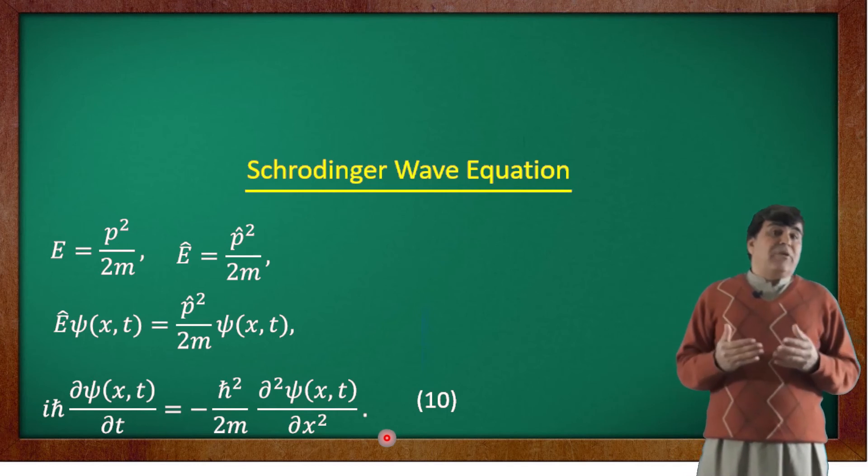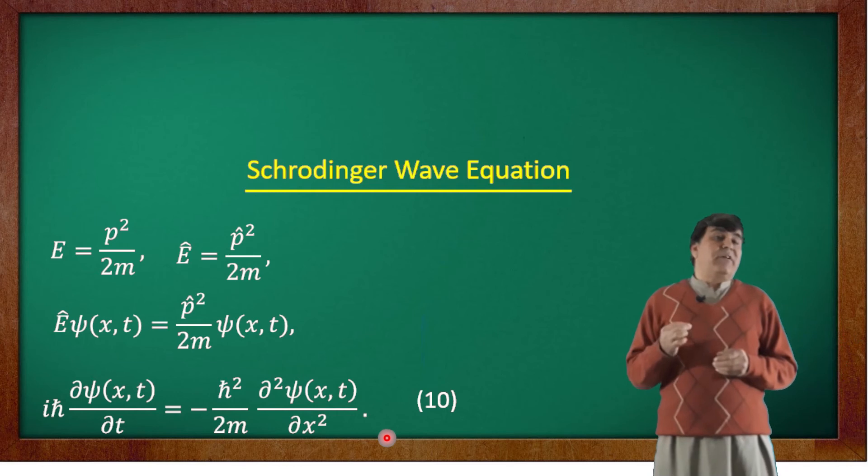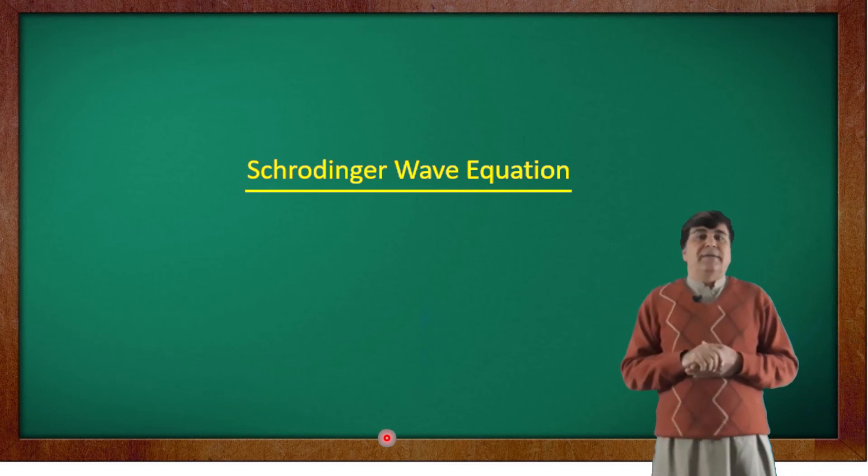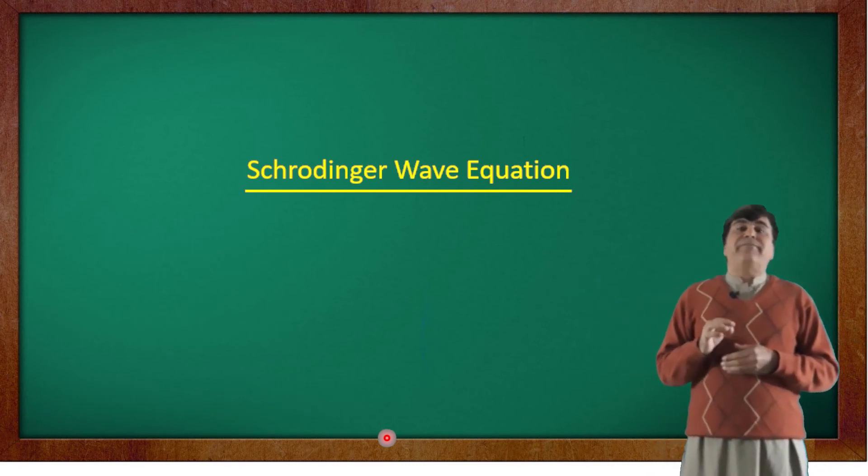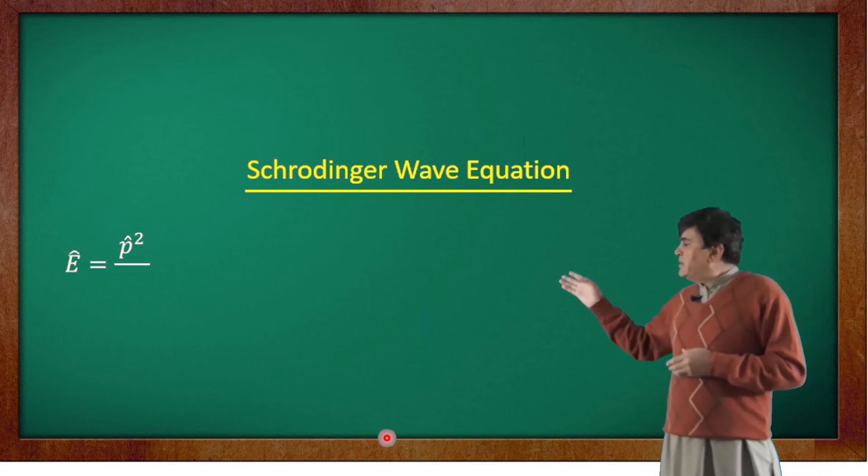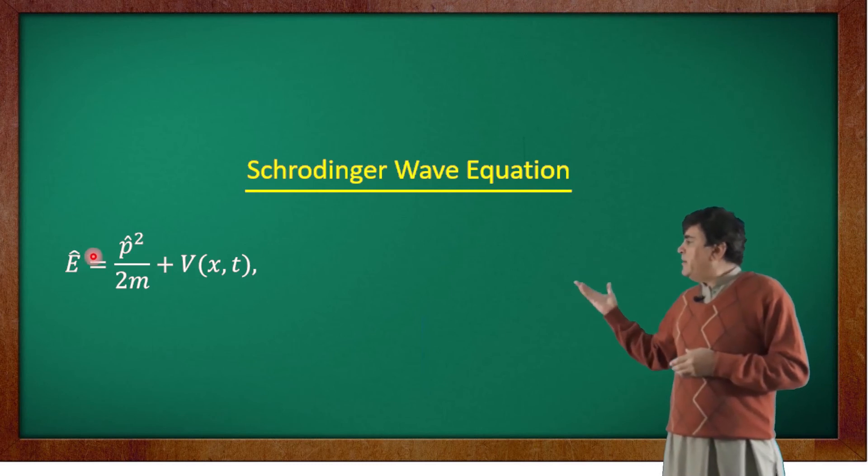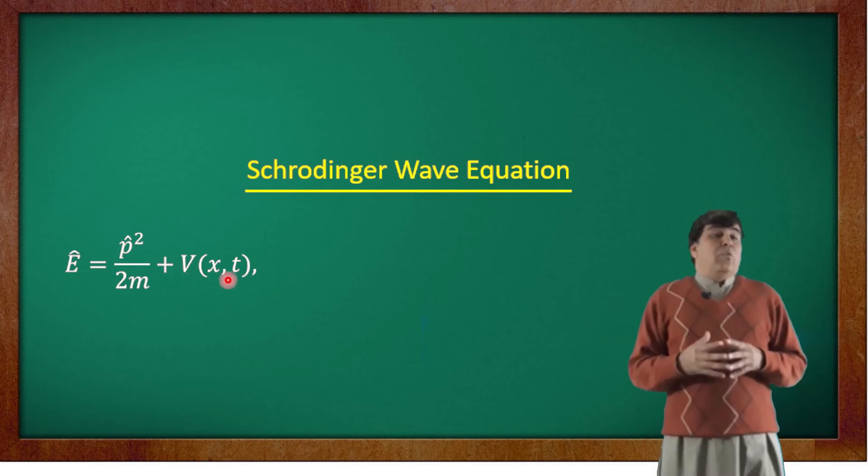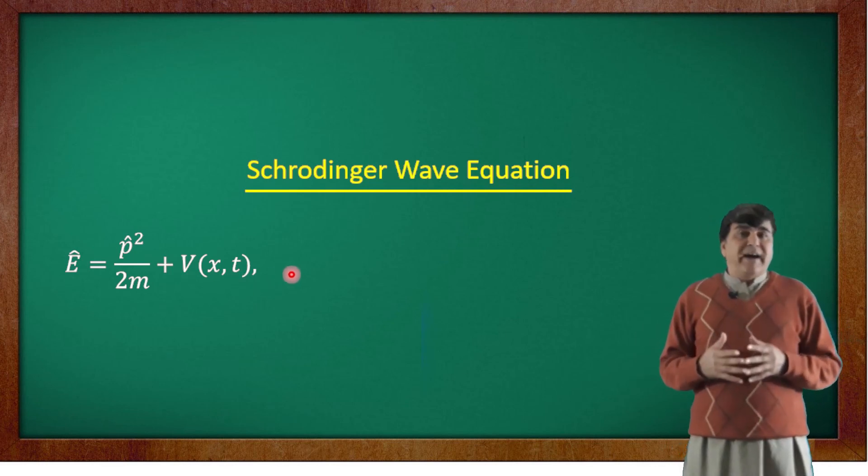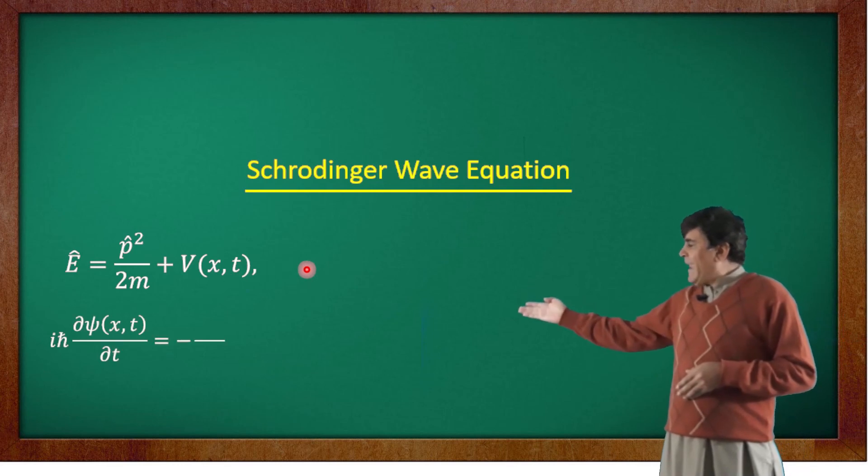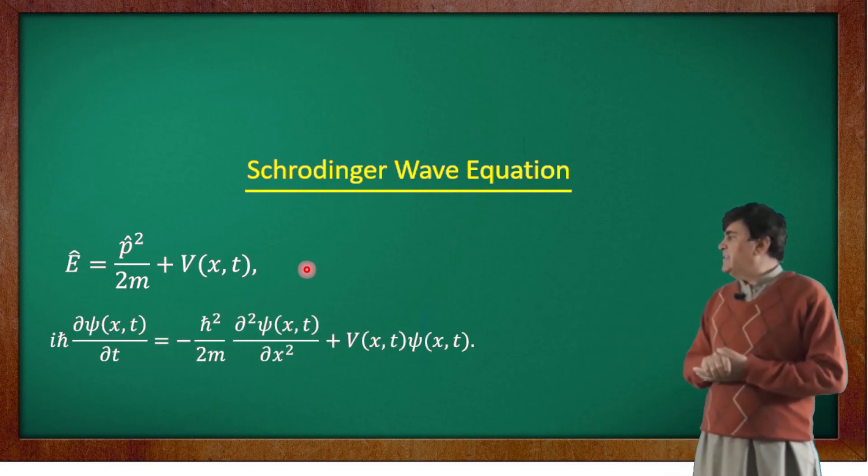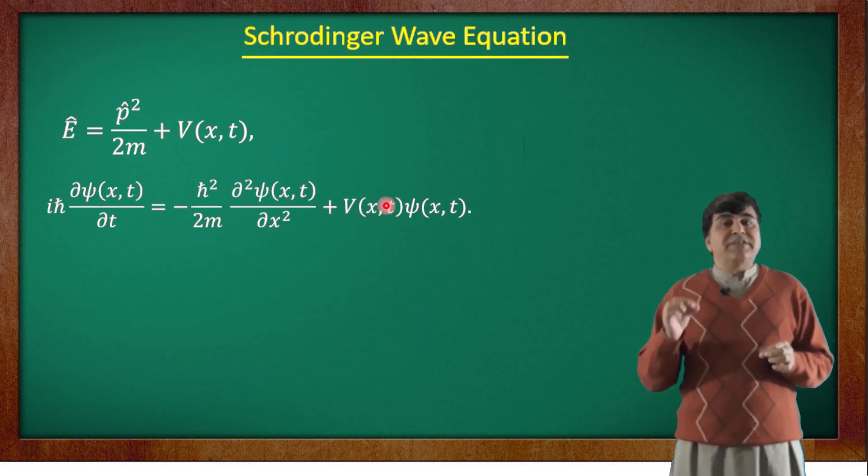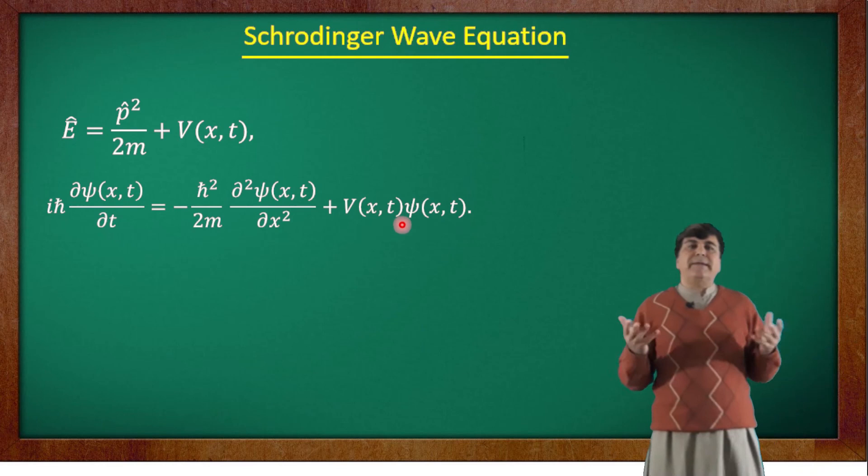This equation can easily be generalized to a bound particle, that is, particles acted upon by a force derivable from a potential energy function in the form of V(x,t). In that case, the operator form of the total energy becomes E operator equals P² operator divided by 2m plus the potential function V of x and t. With this substitution, the Schrödinger equation modifies and can be expressed in this form: we just add the last term V(x,t) applied to the wave function ψ. This is the time-dependent Schrödinger wave equation for bound particles or interacting particles.